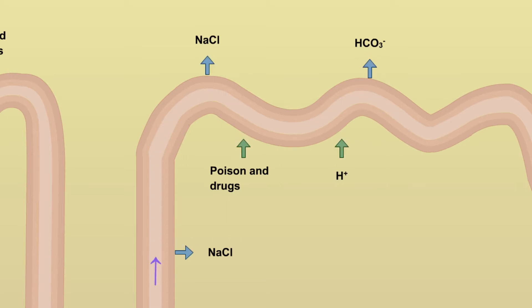The distal tubule ends in the collecting duct. The collecting duct reabsorbs if the body lacks fluid and mineral. The result of reabsorption and filtration will be collected as urine.